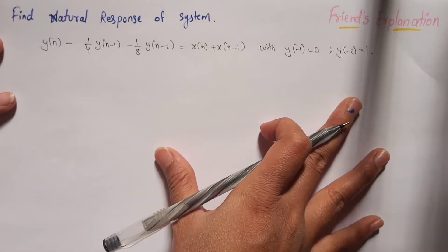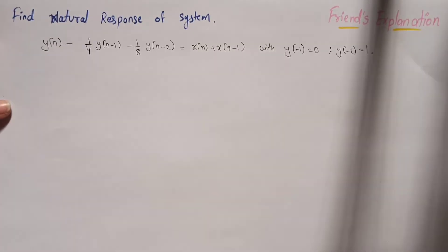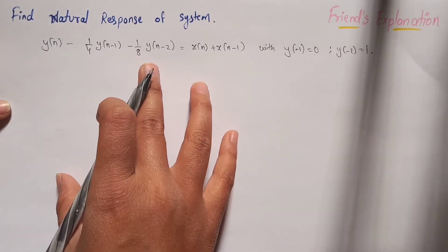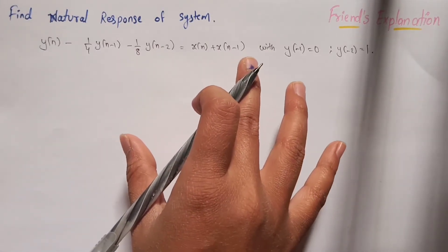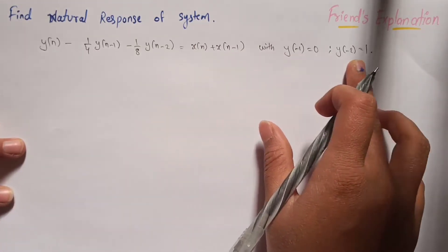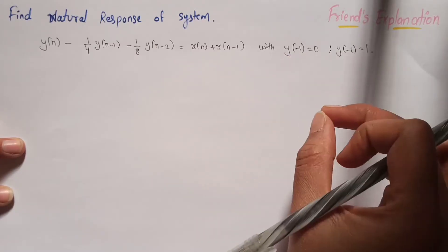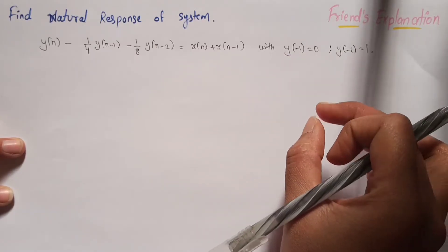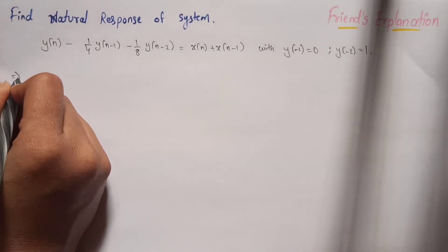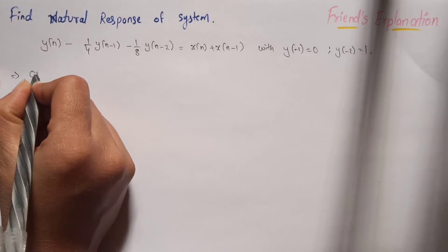So let's consider this question as today's question. As I told you, to find the natural response we have to put the initial inputs as zero and we have to consider the initial conditions. As I mentioned in the previous video, the initial conditions are already given in the question, so you don't have to worry about what they are. Let's start solving — first of all we write what is given to us.